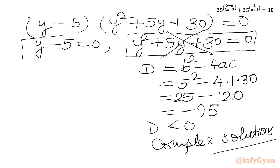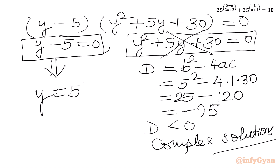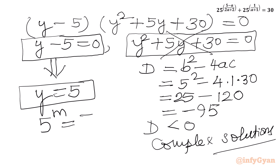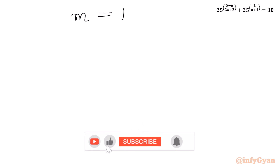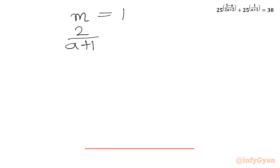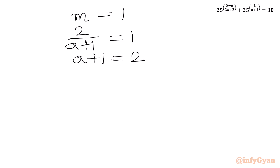The accepted equation is y minus 5 equal to 0, so y equals 5. Now y was our substitution for 5 to the power m, so 5 to the power m equals 5 to the power 1. Since the bases are the same, the exponents must be equal, giving m equal to 1. Now m was our substitution: 2 over (a plus 1) equal to 1. Cross multiplying, a plus 1 equal to 2, so a equals 1.